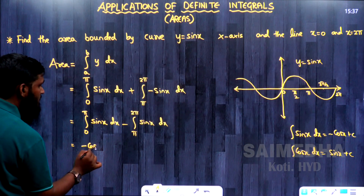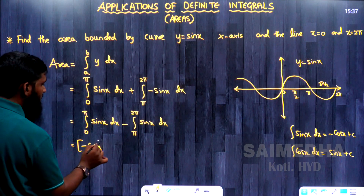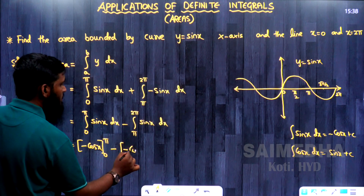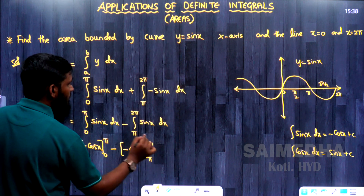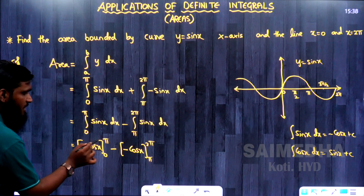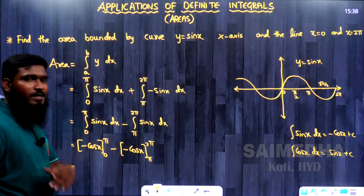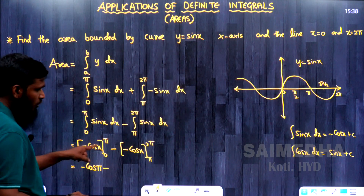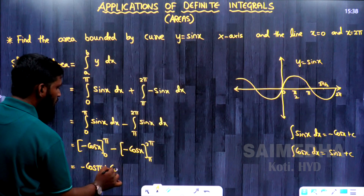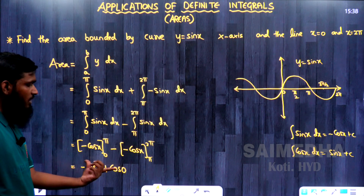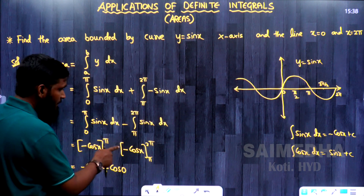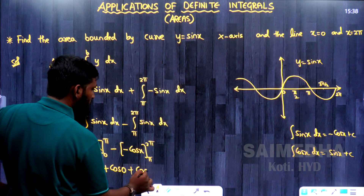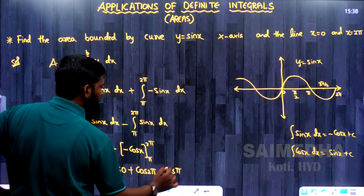Applying upper limit minus lower limit: the first part gives (-cos π) - (-cos 0), which is (-cos π + cos 0). For the second part, taking the minus outside: minus into minus becomes plus, giving [cos x] from π to 2π, which is cos 2π - cos π. Now substituting values: cos π = cos 180° = -1, cos 0 = 1, cos 2π = cos 360° = 1.